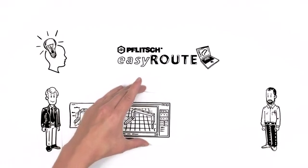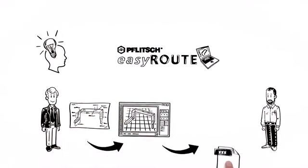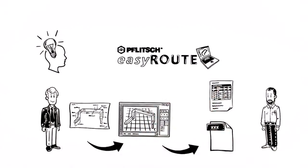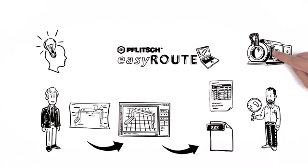After that, Thomas converts the CAD drawing into a system-independent file and sends it to Martin along with the parts list. Using the CAD data, Martin can make sure the cable trunking's route fits his machine perfectly.